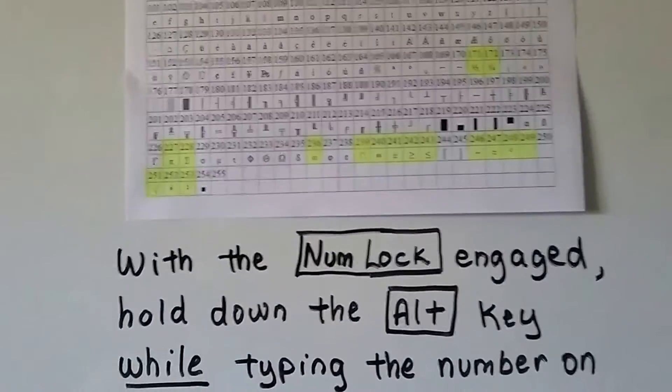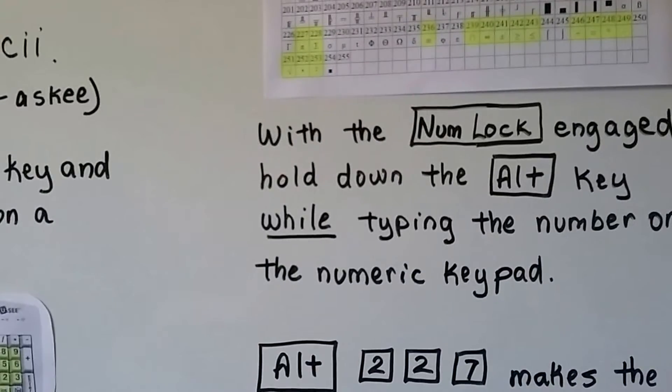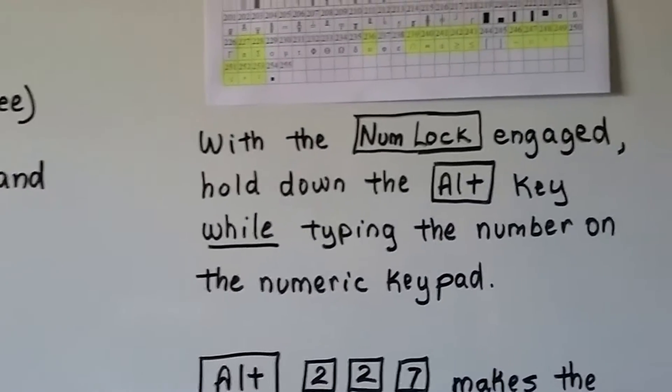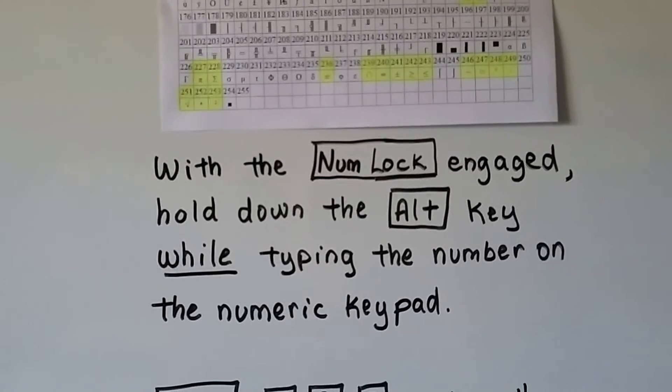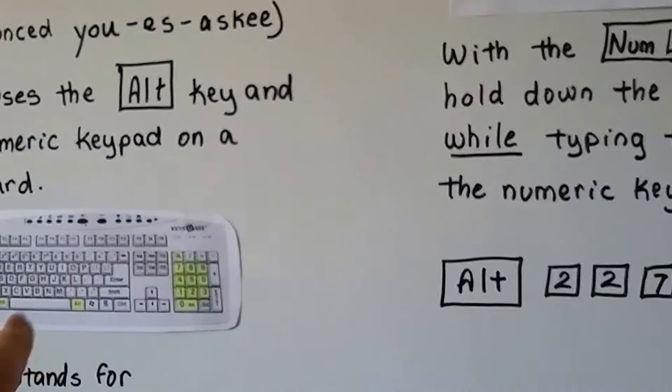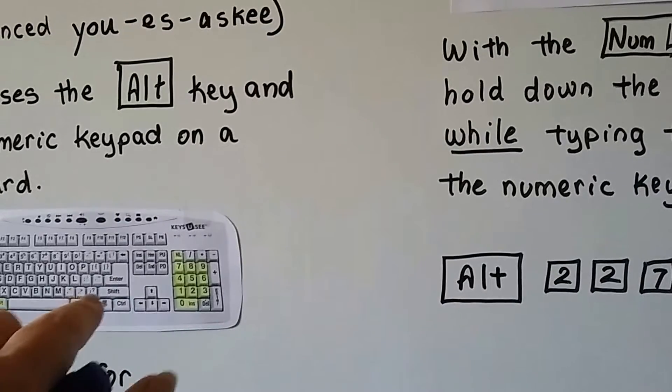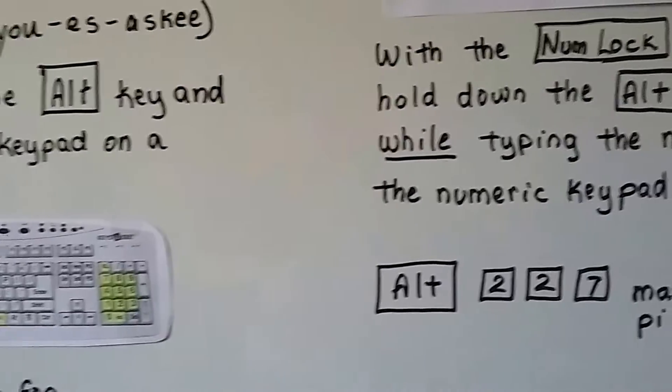With the numlock engaged, that NL or numlock button right up here in this corner, you hold down the ALT key while typing the number on the numeric keypad. You have to keep holding the ALT button.